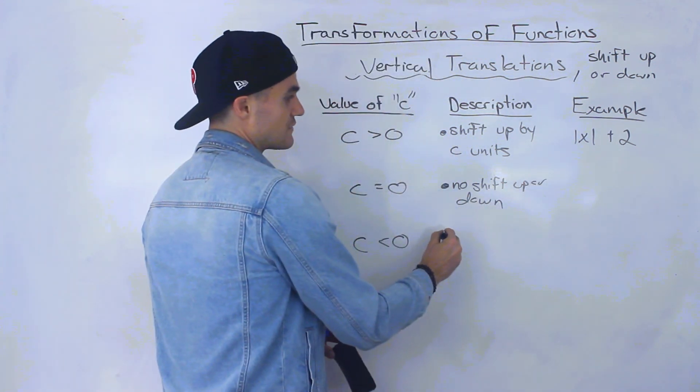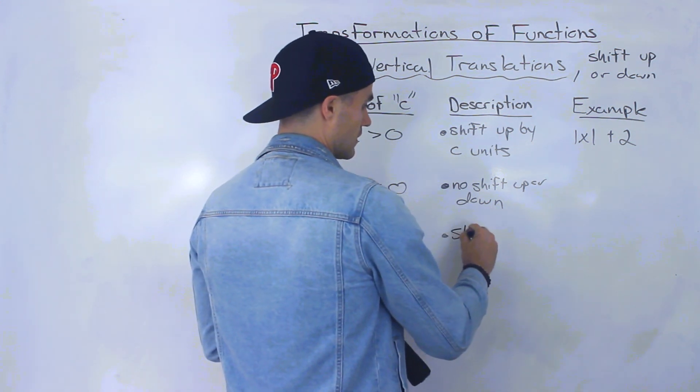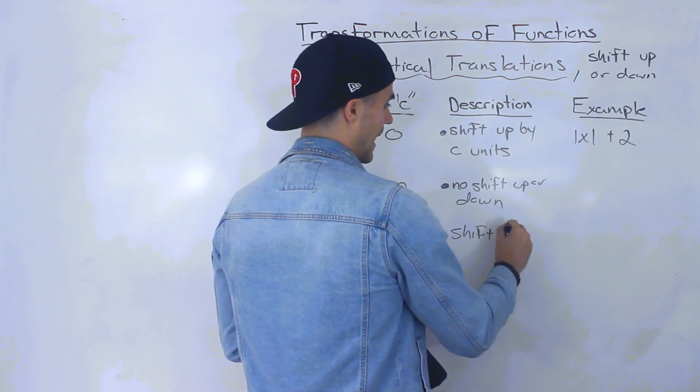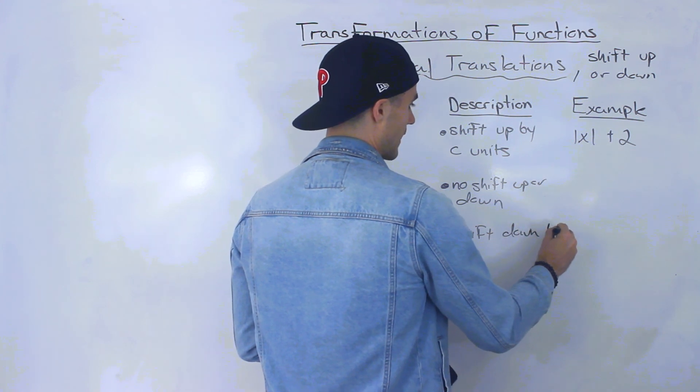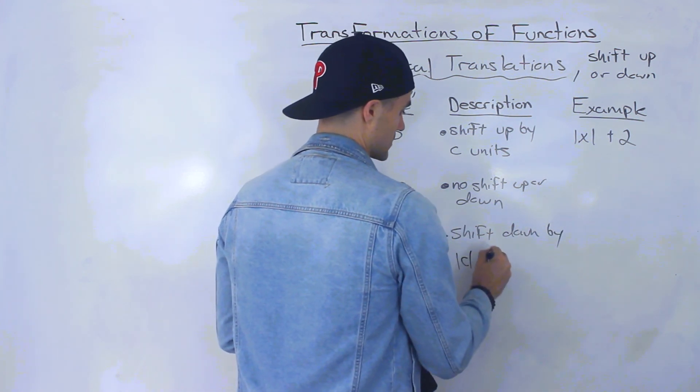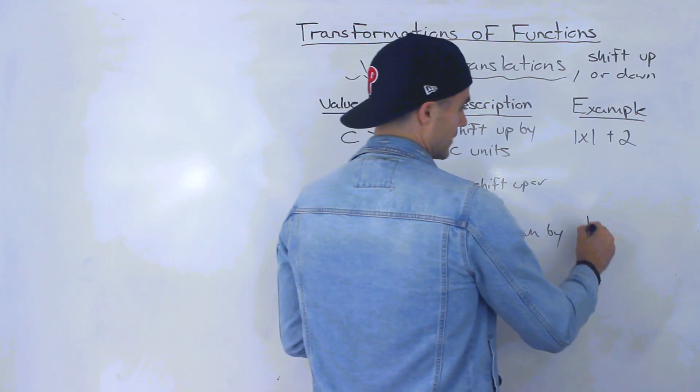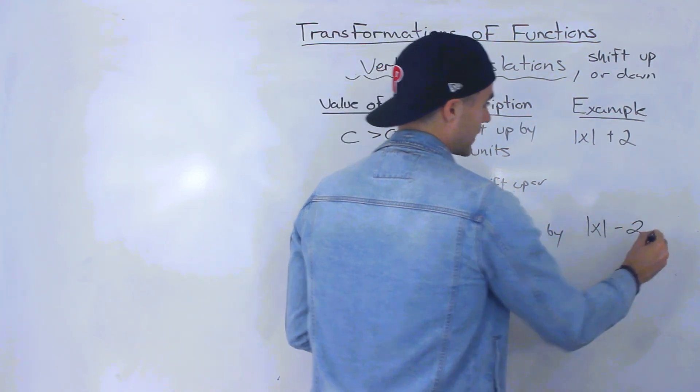And then if that C value is negative, then we are shifting the function down by absolute value C units. An example of that is absolute value of X minus two.